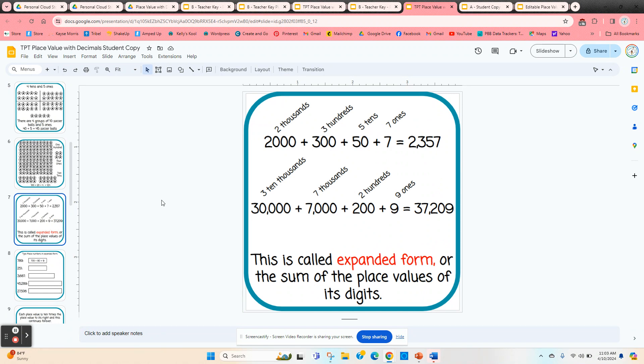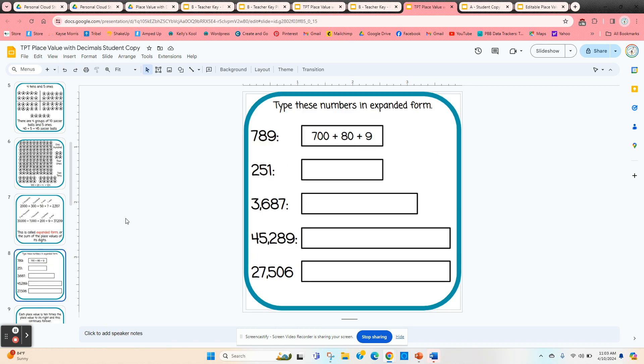So then it explains the expanded form. We just add each of these digits together. Students are asked to actually type the expanded form for each of these numbers, so it would be 200 plus 50 plus 1, and so on.